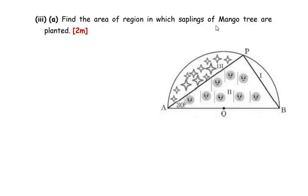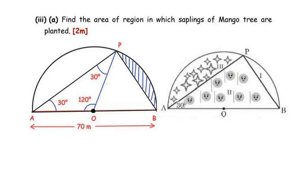Now the third sub-question: find the area of the region in which saplings of mango tree are planted. Mango trees were planted in part 1 of the area. We highlight that region and use the area of a sector to find it. Joining OP, we use the angles from triangle POA found in part one.